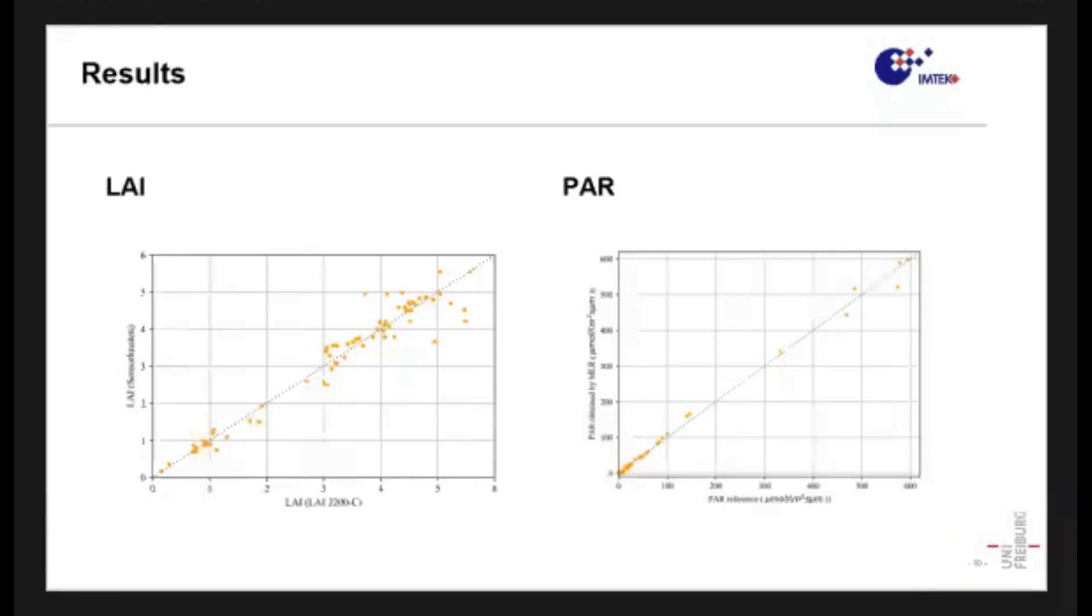This error, which according to us can be improved, is because first of all the sensor and the state-of-the-art instrument have a slightly different field of view. They are close to each other but not on the same point, and this could be a reason for this. One additional aspect that I have to point out is the fact that we use the Monsi-Saeki model, while the state-of-the-art instrument, the LI-2200, uses the Miller model. This model takes also into account the angle with which the light reaches the chip, which we cannot measure at the moment, but which could be our challenge for the future. The Miller model gives a more precise result. Nevertheless, the correspondence is good for both.